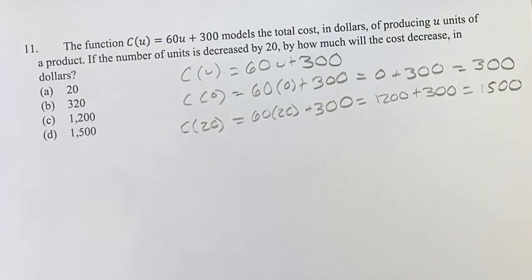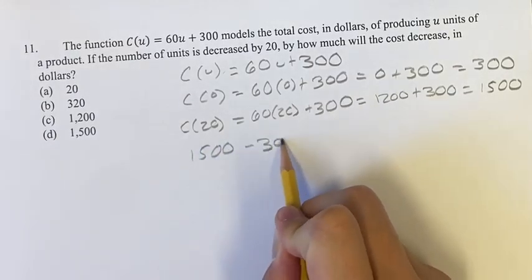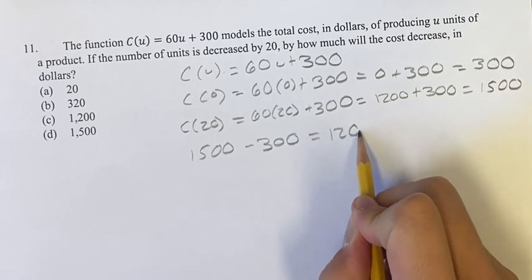Looking at how much the cost would decrease, it would decrease from 1,500 to 300. So 1,500 minus 300 is a decrease of 1,200.